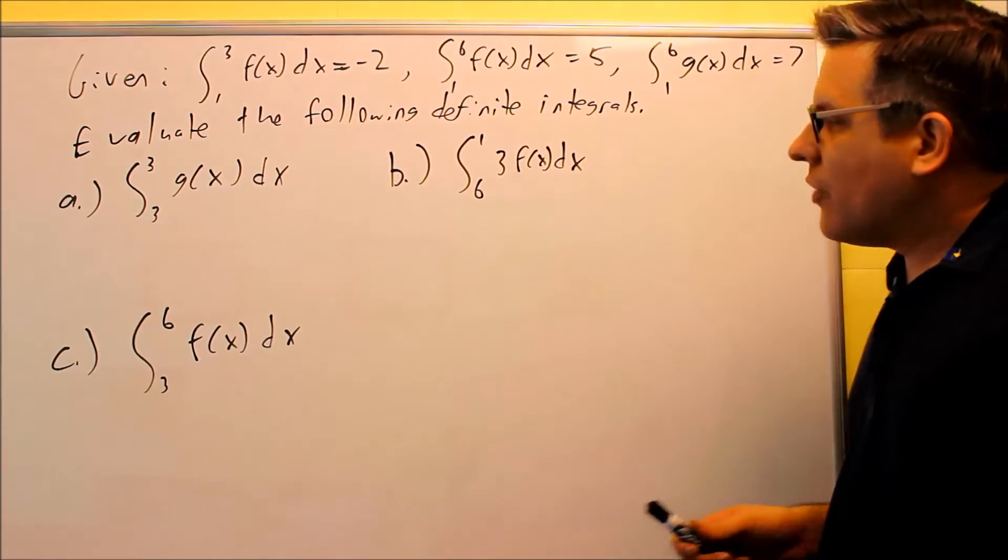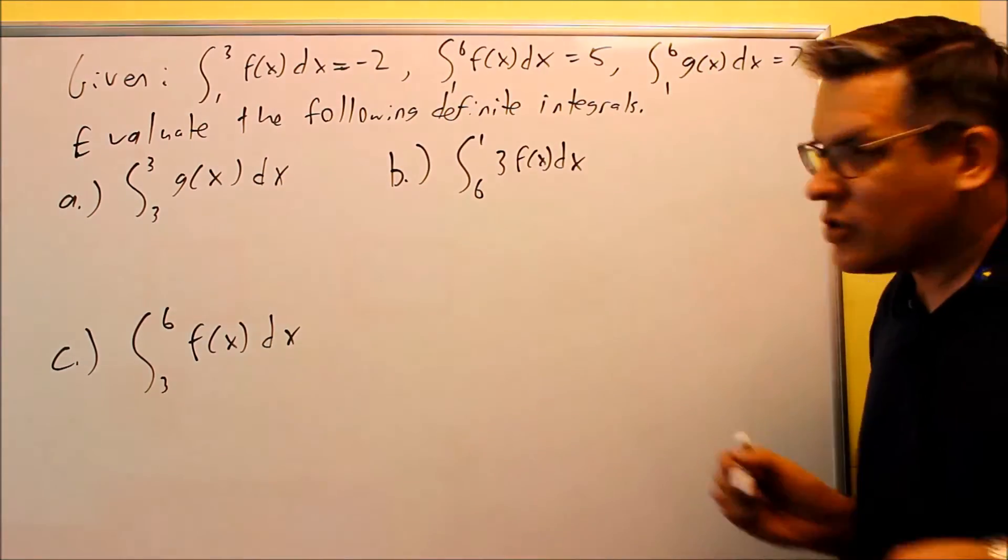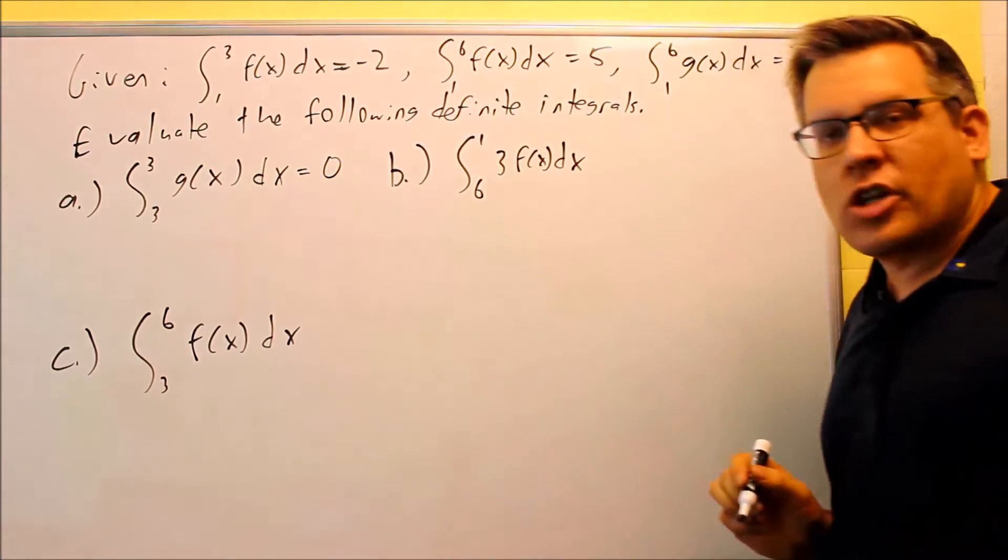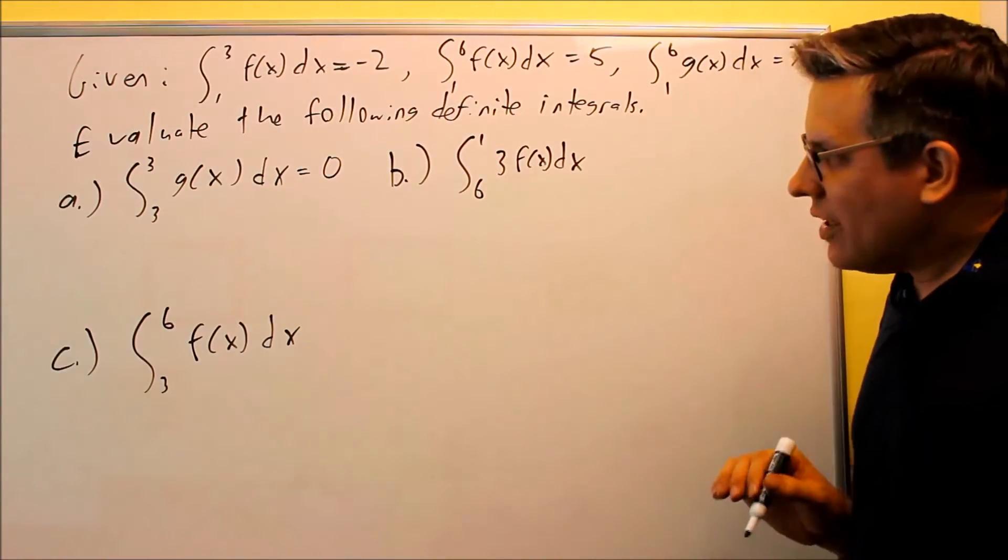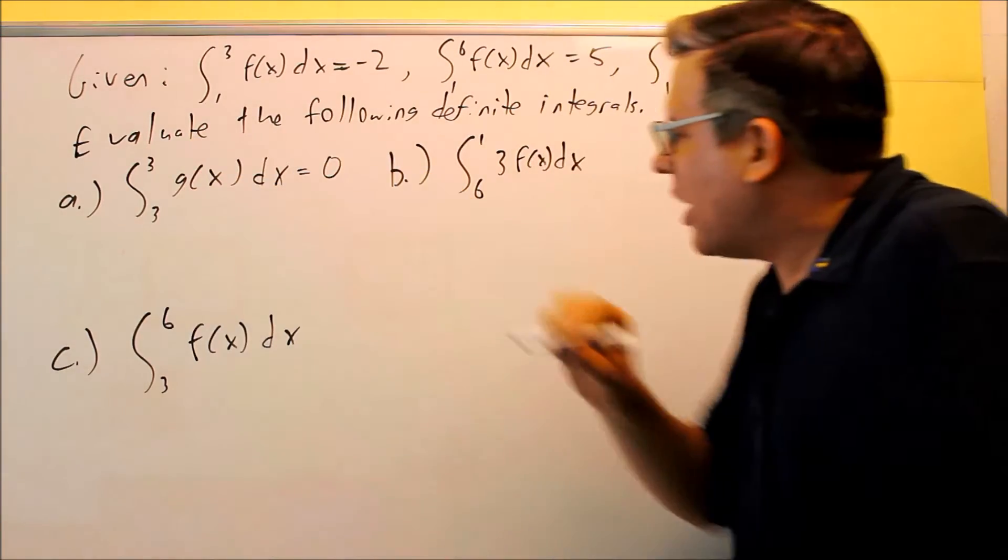Now for part a, I have this number and that number match, and what I know about integrals is if I have these numbers matching, then automatically we know the answer is going to be zero. Nothing to work out, doesn't matter if I have f of x or g of x, these numbers are the same, automatically I'm going to get zero.